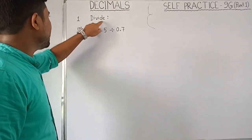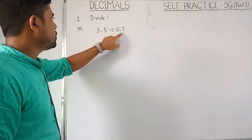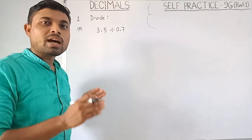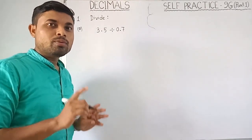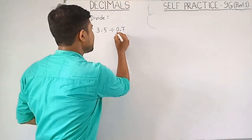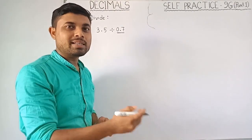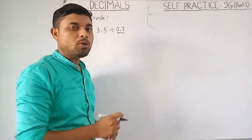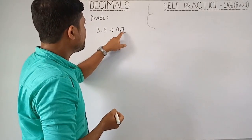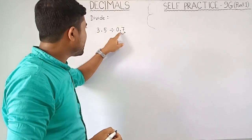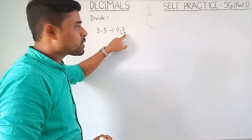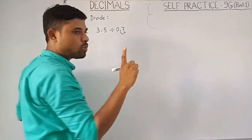Question 1a: 3.5 divided by 0.7. Look here, this is a decimal number and this is also a decimal number. Our first step will be to make the divisor a counting number. We will remove the decimal point by moving it one place to the right side.